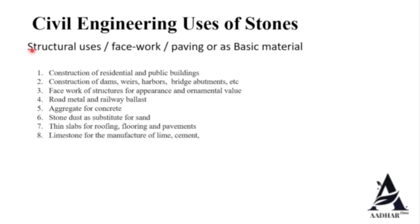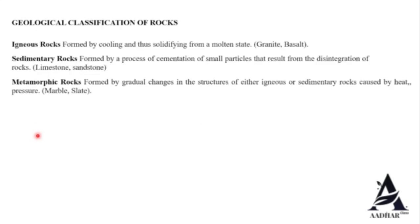Stones are still used to make cement and bricks, and have several uses in construction: construction of residential and public buildings; dams, weirs, harbors, and bridge abutments; face work of structures for appearance and ornamental value; road metal and railway ballast; aggregate for concrete; stone dust as a substitute for sand; thin slabs for roofing, flooring, and pavements; and limestone for the manufacture of lime and cement.